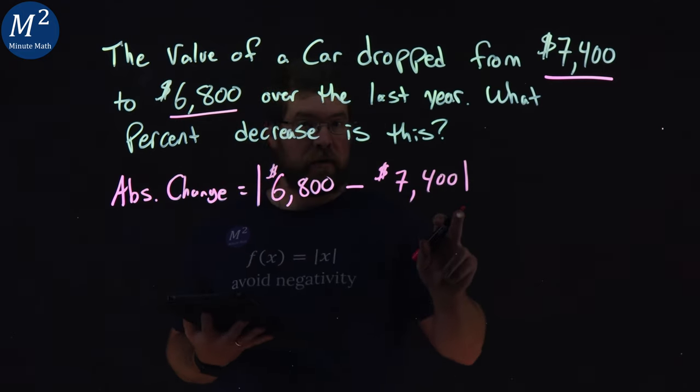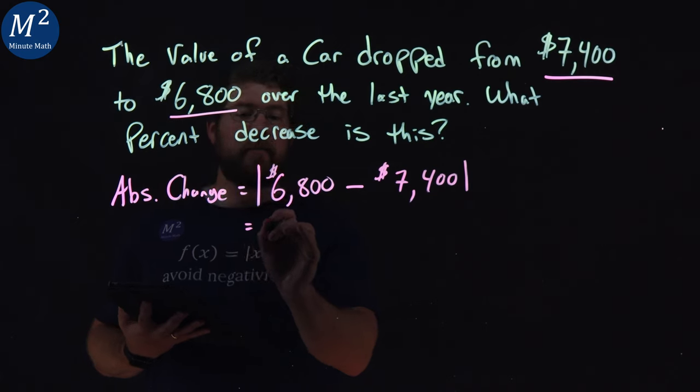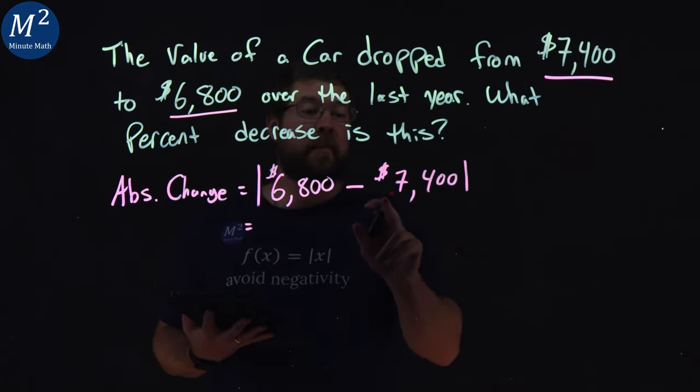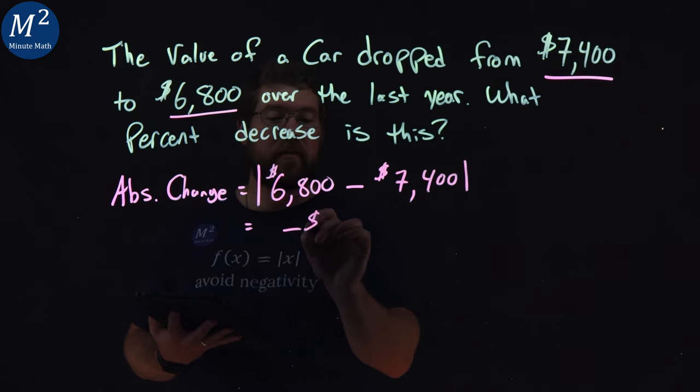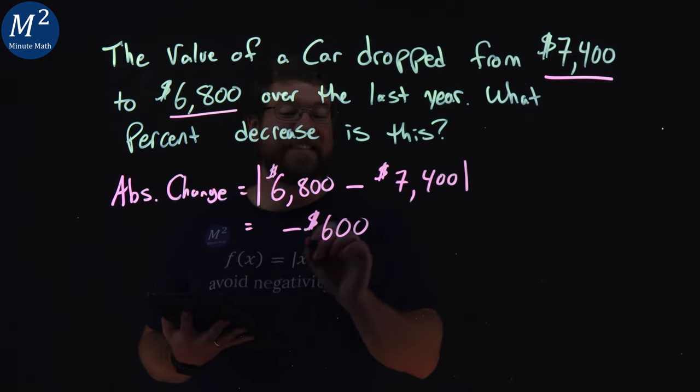Now it's the absolute value, so be careful with that. That comes out to be, well, $6,800 minus $7,400 is negative $600.